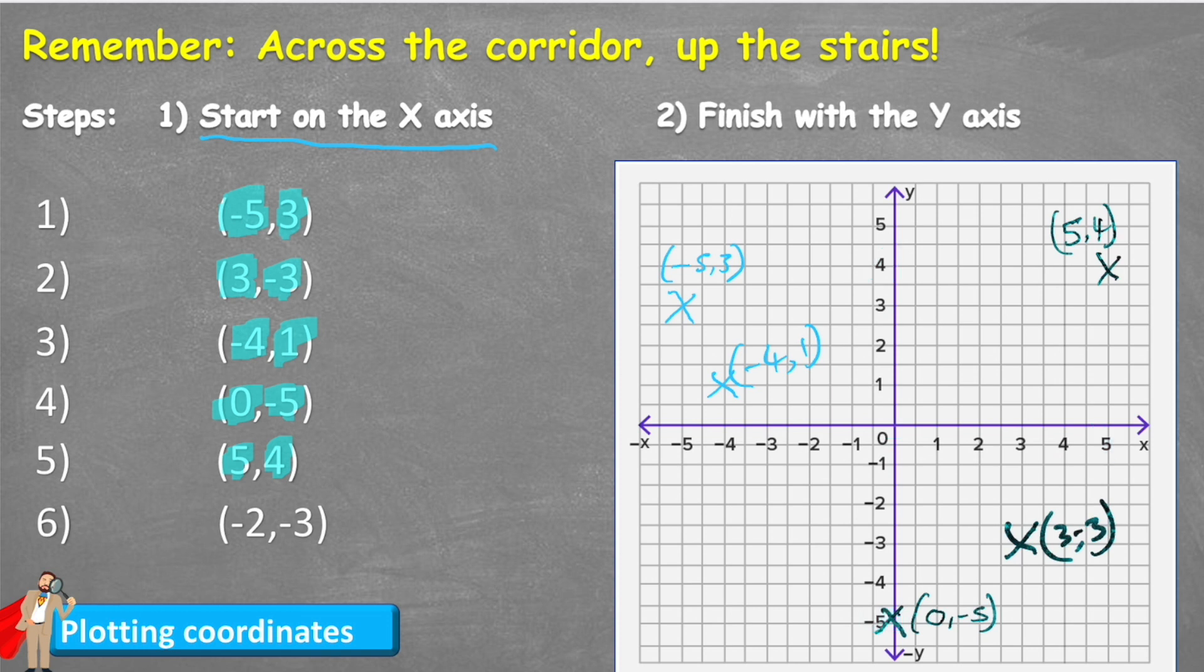Number 6: negative 2 on the X axis and negative 3 on the Y axis. Draw our lines and mark our cross. And this coordinate would be minus 2, minus 3. And there we go, that is all of these six coordinates plotted on this graph.